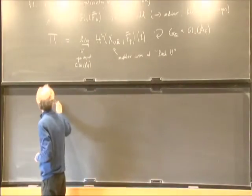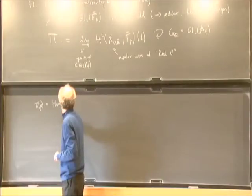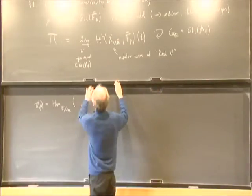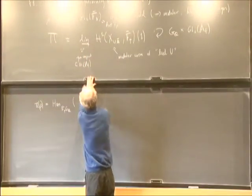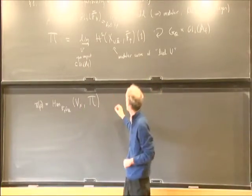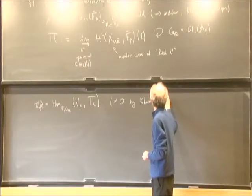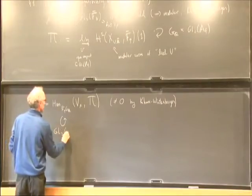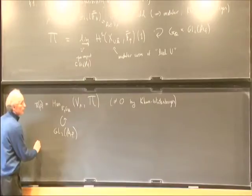I'll call this pi of rho. Taking the Galois-equivariant homomorphisms from rho — I'll call it V_rho — to this big pi, we know this is non-zero by modularity by Khare. And now this has an action of GL2 of the finite adèles.